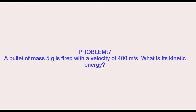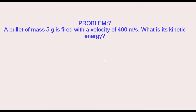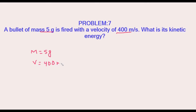Let us move to the next problem, problem number 7. In this problem, a bullet of mass 5 grams is fired with a velocity of 400 meters per second. We have to find the kinetic energy.